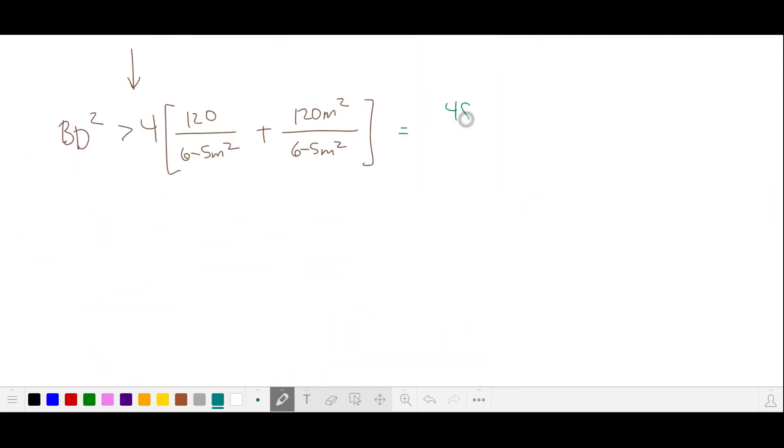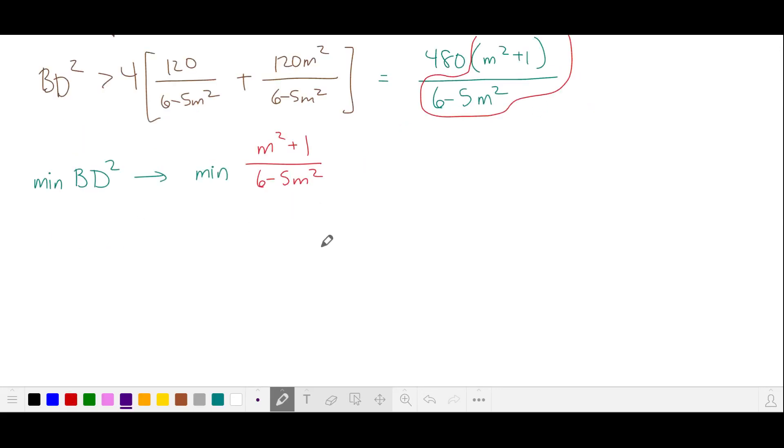When we simplify, we get this expression. To minimize BD squared, we're going to need to minimize this part of the fraction. This will be easier to evaluate if we can get rid of the m squared in the numerator. So I'll start by multiplying by 5 over 5 so I can match the coefficient of m squared in the denominator. This gives me 5m² plus 5 in the numerator. Then to match the 6,